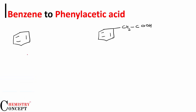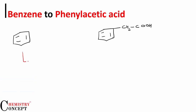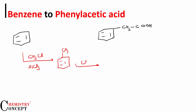What we need to do first is Friedel-Crafts alkylation: CH3Cl in the presence of anhydrous AlCl3. The result will be toluene, or methyl benzene.